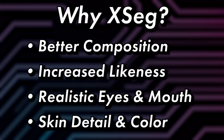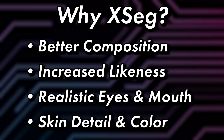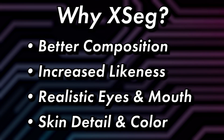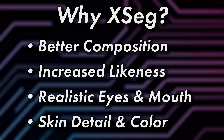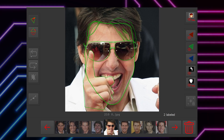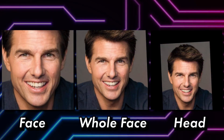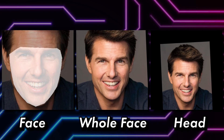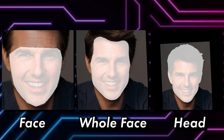Using XSEG will result in a better composition and increased likeness to the source face set, more realistic eye movement and mouth movement, better skin detail and color. XSEG also allows you to exclude obstructions such as hands, hair, glasses, piercings, tattoos, and so on. While the default mask may be useful for smaller face types, larger face types such as whole face and head do require a custom mask for the best result.